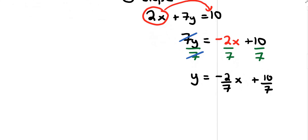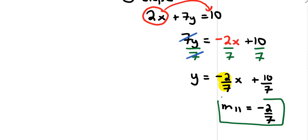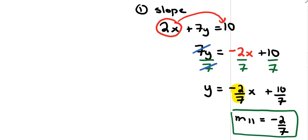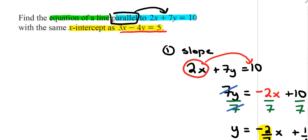The slope is negative 2 over 7, so if the line is parallel, its slope is also negative 2 over 7. Let's box that because we'll need it later in the problem.